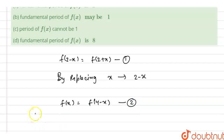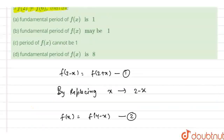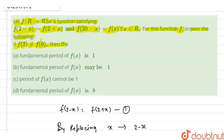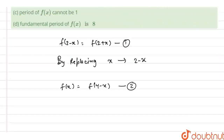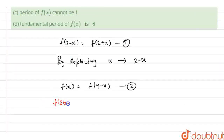Now, we have also been given that f(20 − x) = f(x). From here we have f(20 − x) = f(x) as given — let's say this is our third equation.